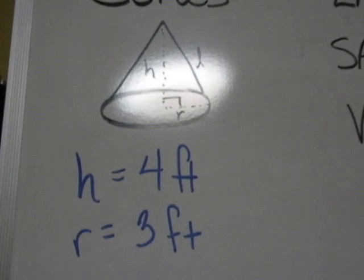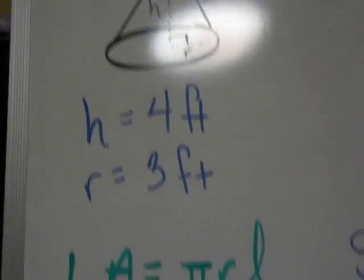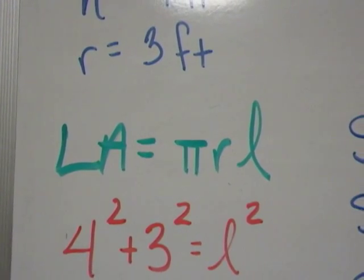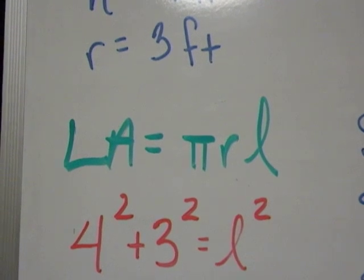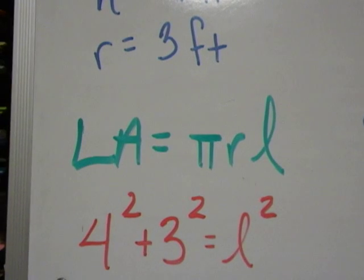Let's work with a cone that has a height of four feet and a radius of three feet. Begin with lateral area. Lateral area is pi RL. I don't know the L, so I need to plug in my given information into the Pythagorean theorem to solve for L.